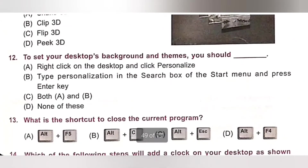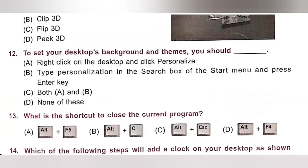Twelfth: To set your desktop background and themes, you should dash. Option A: Right click on the desktop and click Personalize. Option B: Type personalization in the search box of the Start Menu and press Enter key. Both A and B are correct. To set your desktop background and themes, you can use either option A or B. Option C — Both A and B — is the correct answer.